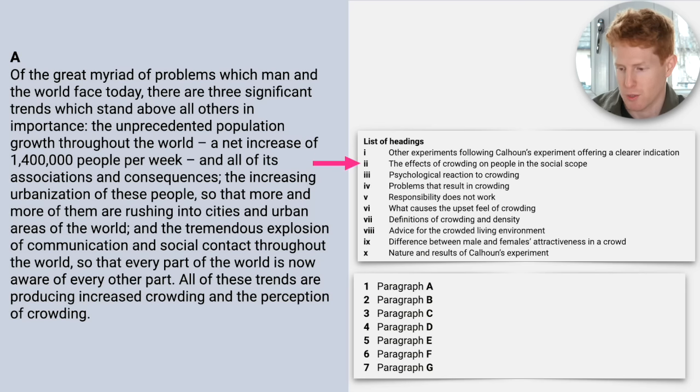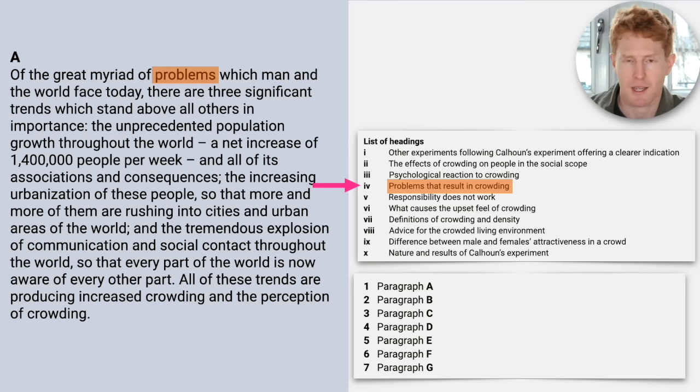So what I'm going to do is quickly read through paragraph A. I'm going to focus on the first and the last sentence especially, and then I'm going to go through the list of headings. So number one, number two, number three, number four. Now number four is interesting, because we've got this word problems. It appears in the heading, and it also appears in the text. So I'm going to make a note of that. Maybe I'll put a circle on the question paper. But I'm not going to just say that that's the answer.